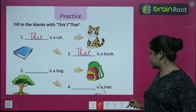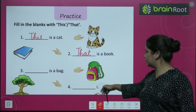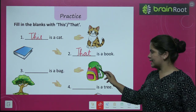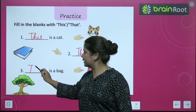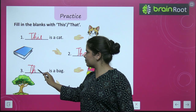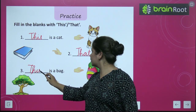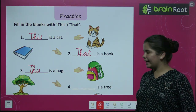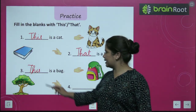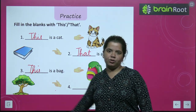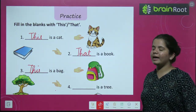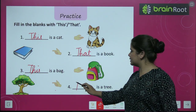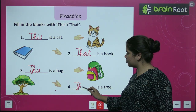Next, dash is a bag — bag पास में है hand के, तो हम लिखेंगे 'this is a bag'. ठीक है? Next, dash is a tree — tree दूर है hand से, तो यहाँ पर आएगा 'that is a tree'.